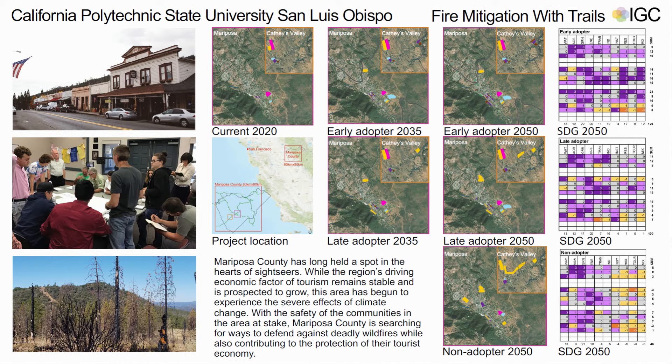Our project was in Mariposa County, a very rural county and one of the oldest counties in California. It has to do with the city of Mariposa, which is the county seat. It's a very rural economy based mostly on tourism. These people depend on the three million visitors traveling through Mariposa County traditionally to go to Yosemite National Park. A big key issue was fire mitigation through trails and adding fire preventative measures to keep people and their economy safe.